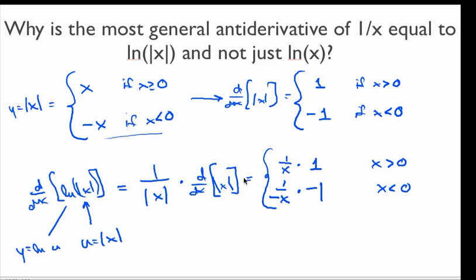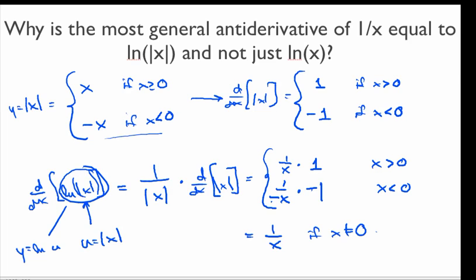If x is equal to 0, this derivative fails to exist. In either case — x positive or x negative — notice that we get 1 over x. When x is positive we get 1 over x directly, and when x is negative we have two negative signs that multiply together, giving us 1 over x as well. So that proves that natural log absolute value of x is actually an antiderivative for 1 over x, since natural log absolute value of x and natural log of x have the same derivative.